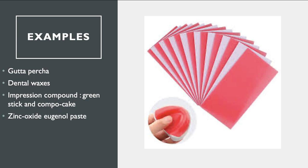The examples include, from dental materials obviously, gutta-percha, the GP points that are used to fill the root canals in the process of RCT — that is root canal treatment. Dental waxes, that include wax sheets and beading wax. The impression compound, including the green stick and copper cake. Zinc oxide eugenol impression paste.